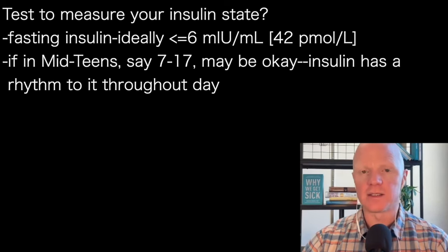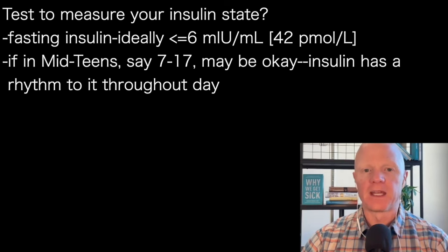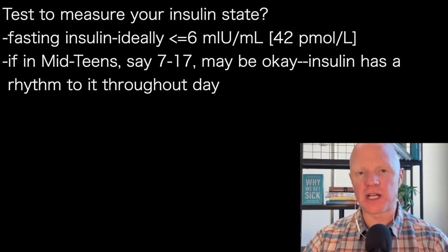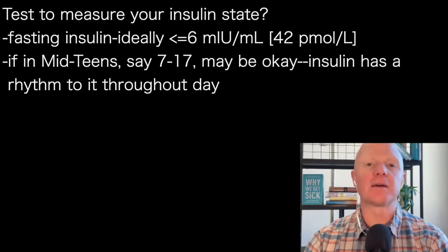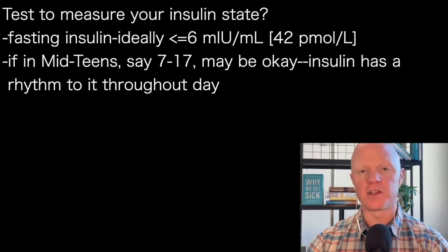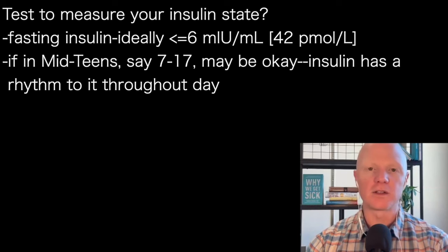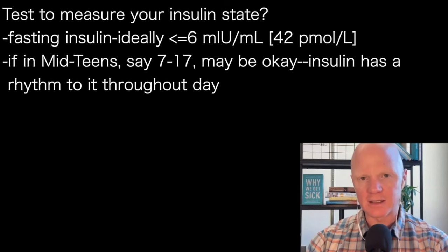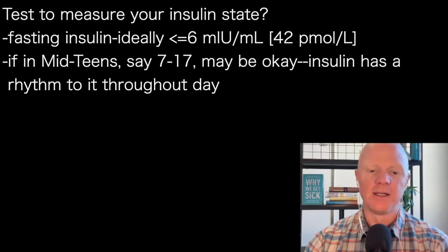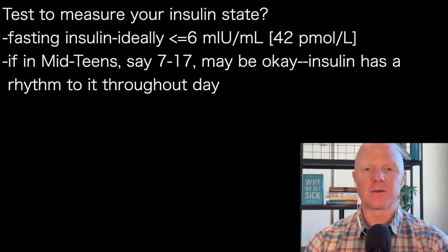One of them is fasting insulin. Insulin is a marker of insulin resistance. Ideally, that number is less than six in a fasted state. So if you're doing a 12-ish hour fast, you'd love for that number to be six microunits per milliliter — those are U.S. units. You can convert to picomoles as needed; the conversion is around 27-30 picomoles for those outside the U.S.